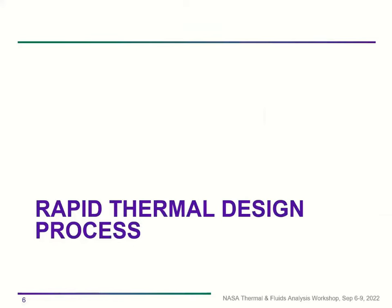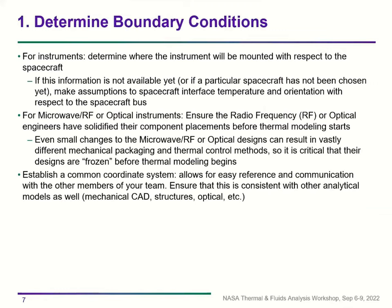The first step is to determine boundary conditions. For instruments, this means determining where the instrument will be mounted with respect to the spacecraft. If that information isn't available yet — for example, if the spacecraft hasn't been chosen — you can make assumptions about spacecraft interface temperature and orientation based on the science of the mission.